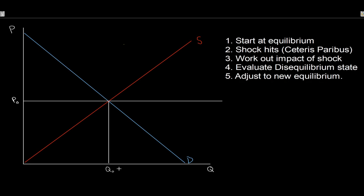Then we want to actually apply the shock. We start at equilibrium with our initial price P0 and quantity Q0. The shock hits, we analyze it, we determine if it's a supply or demand shock, and we shift our curves appropriately. After shifting, we recognize we have a disequilibrium - either excess supply or excess demand. A common mistake: people apply the shock, then stop because of ceteris paribus. But ceteris paribus applies only when the shock hits - then the world starts to react to that shock and we adjust to a new equilibrium.